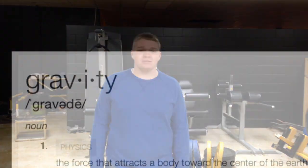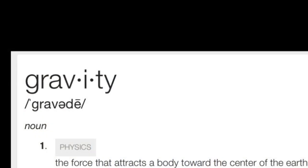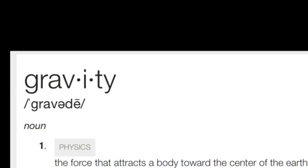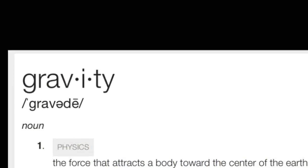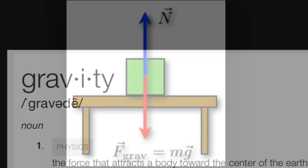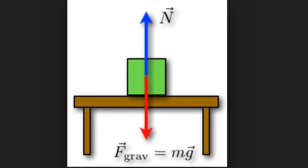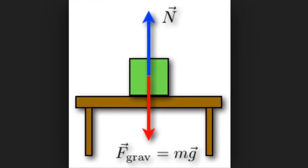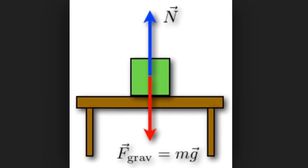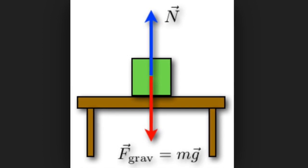The next topic we'll cover is gravity. Gravity is defined as the force that attracts a body towards the center of the earth. The formula for gravity is F equals mg, or mass times gravity equals force.